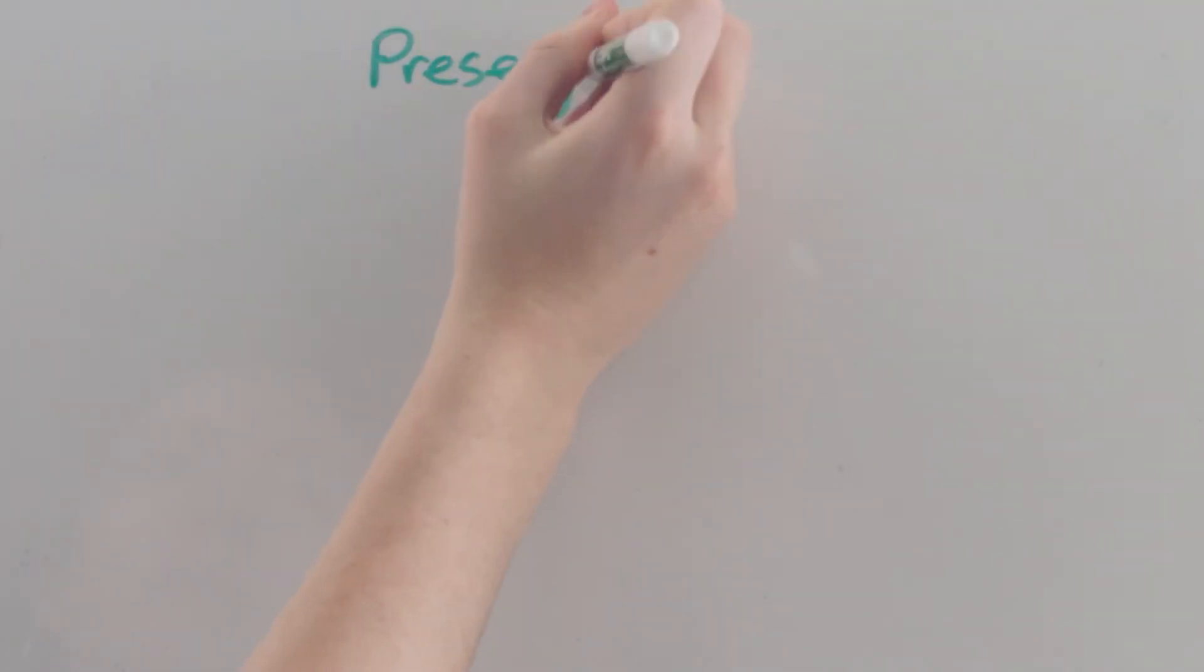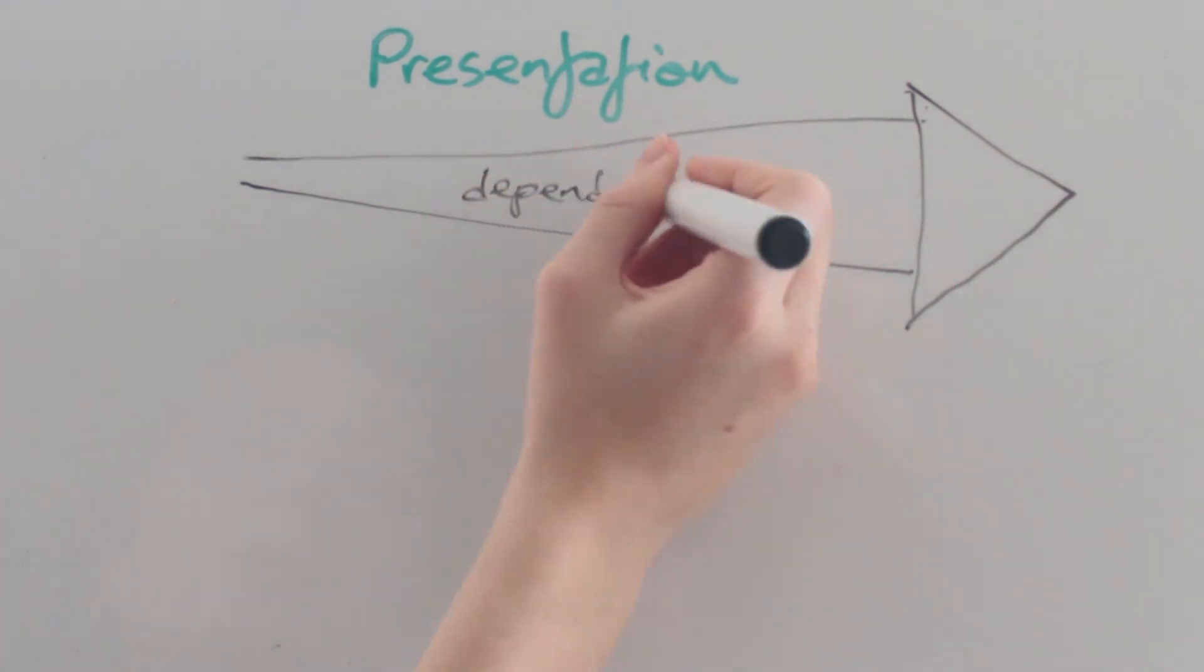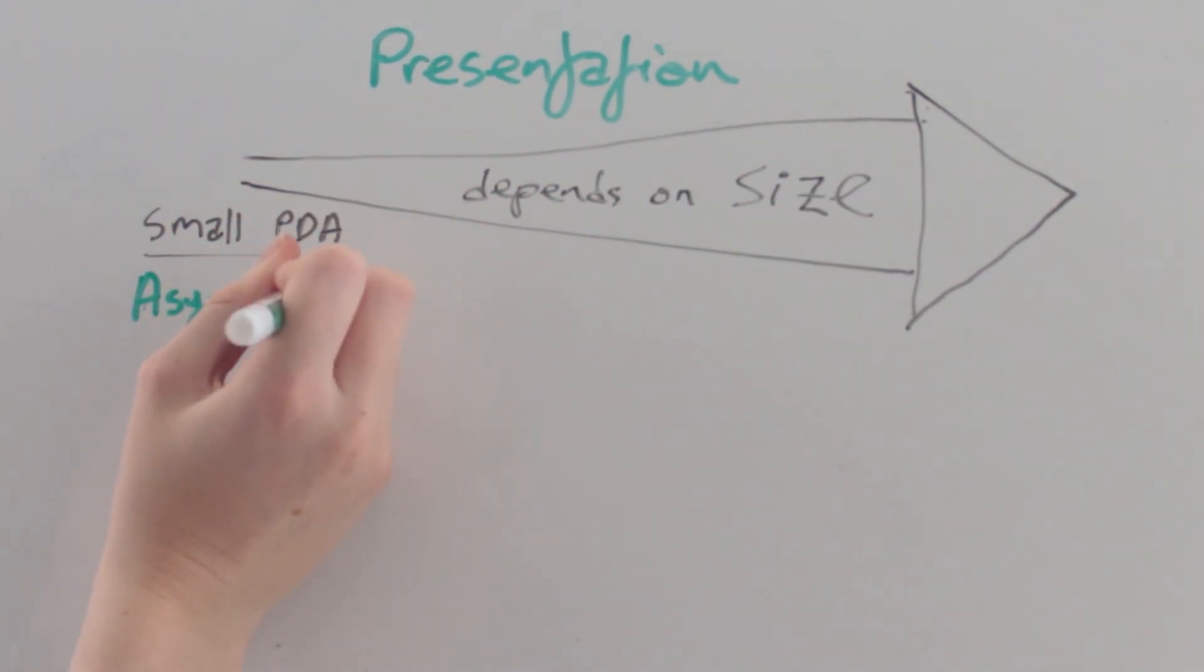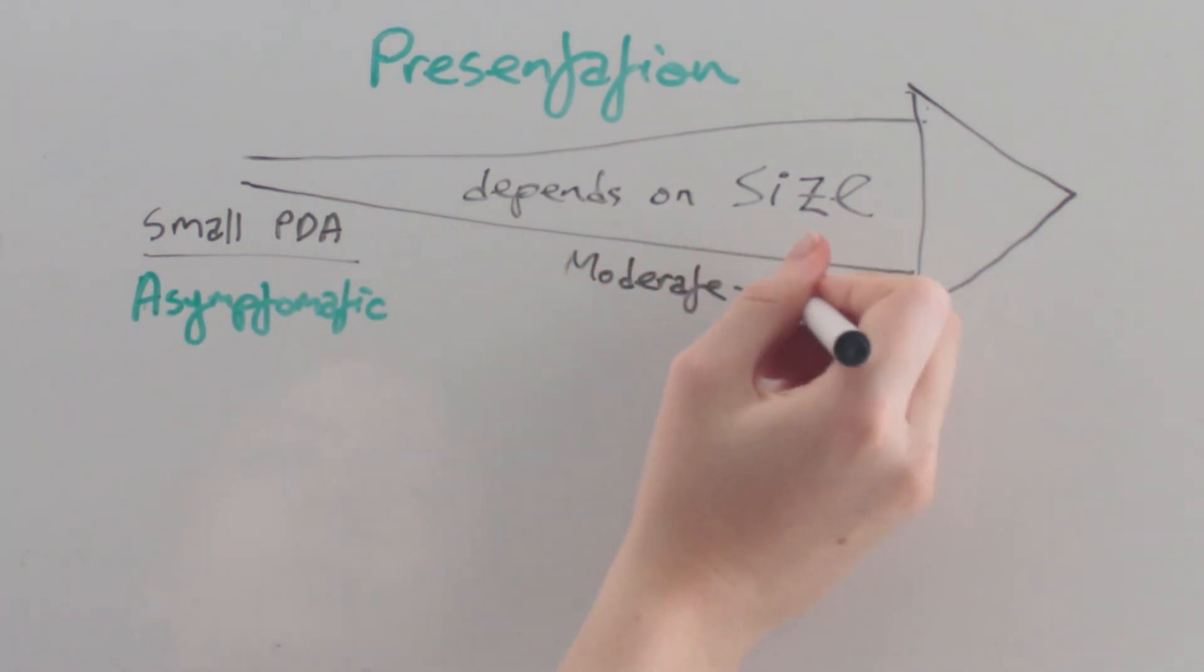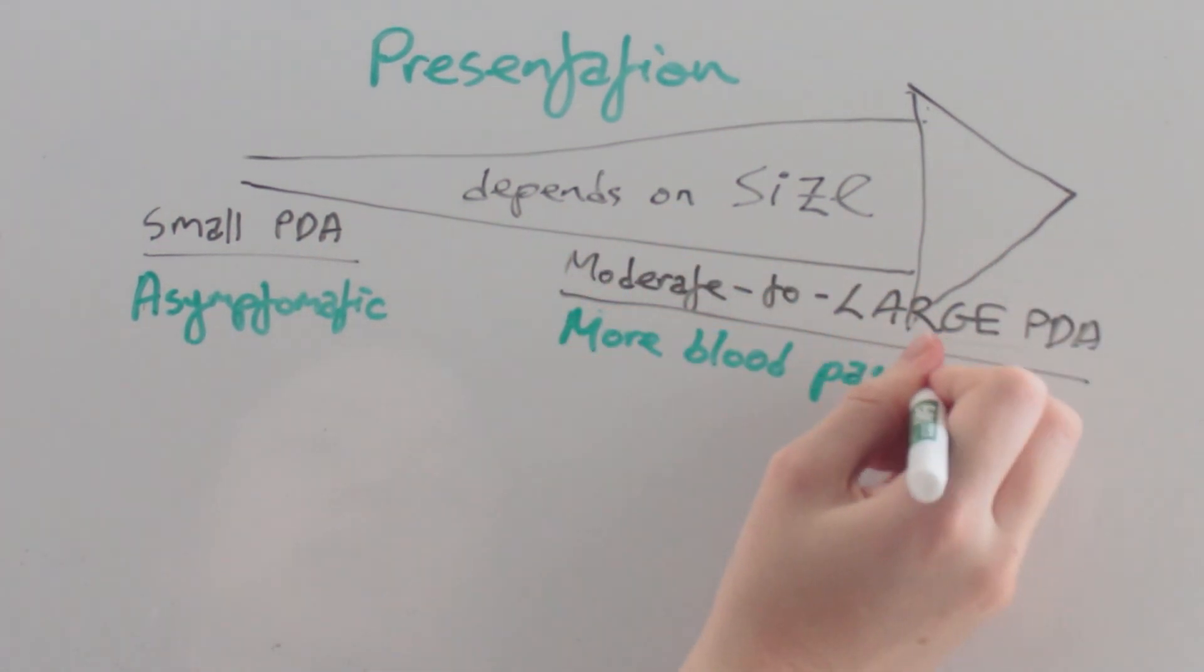The presentation of patent ductus arteriosus is dependent on its size. A small PDA will be asymptomatic, whereas a moderate to large PDA means that more blood is passing through the lungs.